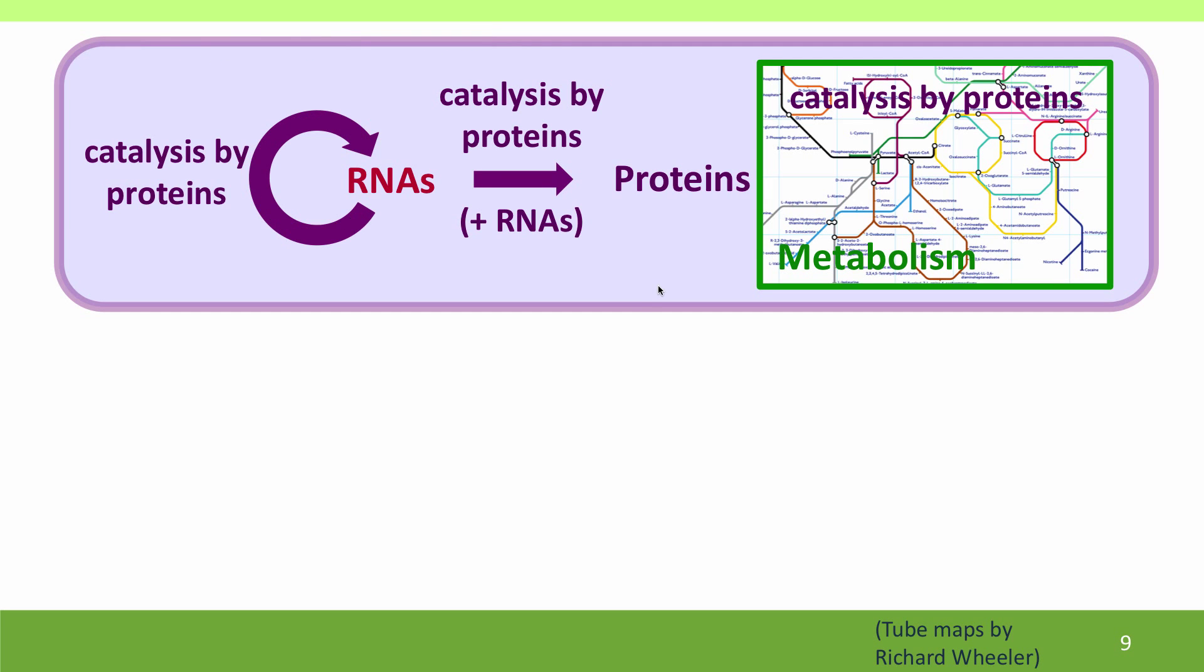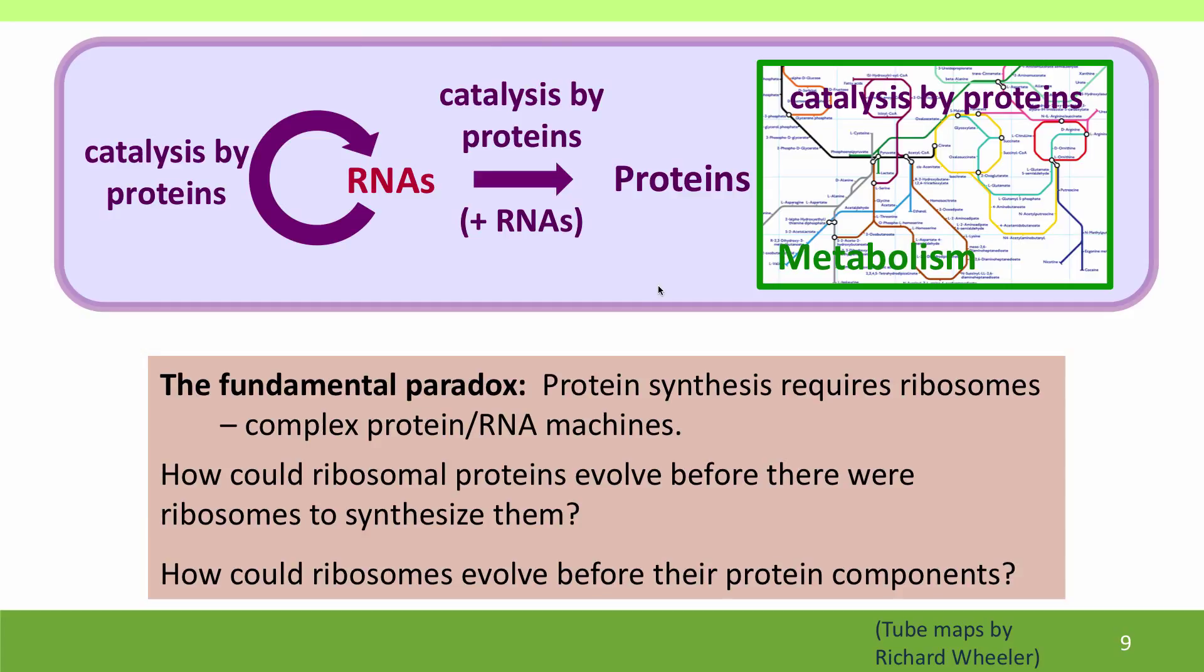However, it's still too complicated to have arisen by chance, and the reason is that there's a fundamental paradox in protein synthesis. So protein synthesis, production of proteins, requires not just the RNA in the ribosomes, but it requires the proteins in the ribosomes. So ribosomes are partly RNA machines, but they're also protein machines. You take away the protein, the ribosome can't synthesize anything. So protein synthesis requires ribosomes, but for ribosomes to function, you have to already have a way to make proteins. So then we get into this silly paradox, how could ribosomal proteins evolve before there were ribosomes to make them? And how could ribosomes evolve before there was a way to make the proteins of the ribosomes?